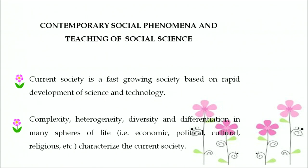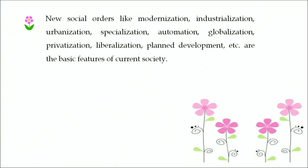Contemporary social phenomena are changing day-to-day life and have changed the teaching of social science. Current society is a fast-growing society based on rapid development of science and technology. Complexity, heterogeneity, diversity, and differentiation in many spheres of life — such as economics, political, cultural, and religious — characterize the current society, which are very important parts of the development of any society.